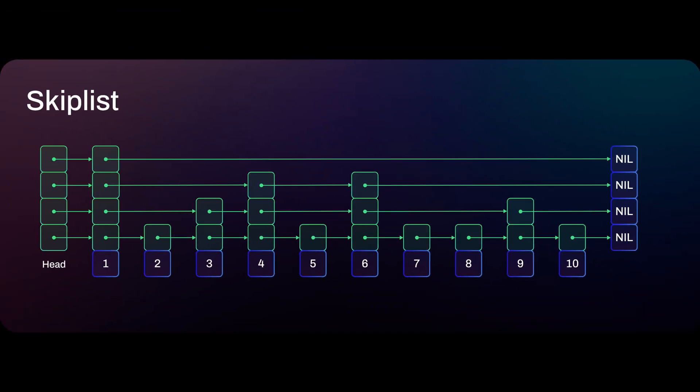Finally, let's talk about why Dragonfly is considered modern. Just one example: in Redis, the sorted set data type is backed by a lower-level data structure called a skip list. While efficient, the memory overhead can be quite high — as you can see here, in order to store the actual data, additional layers of nodes are needed to maintain the structure and search speed for the skip list.